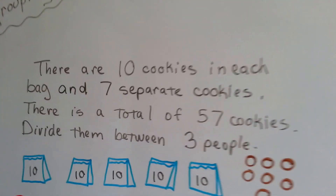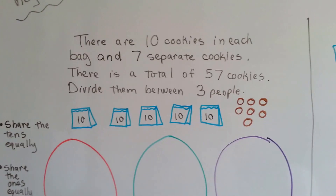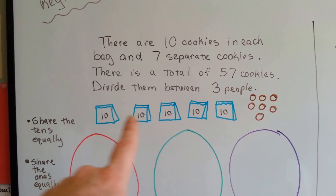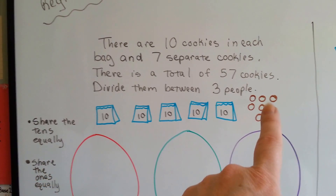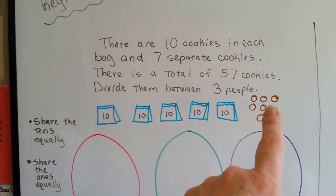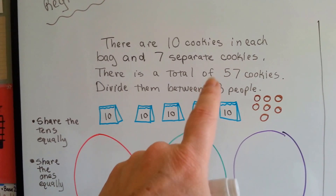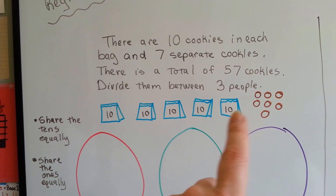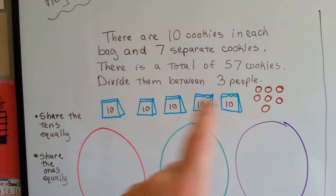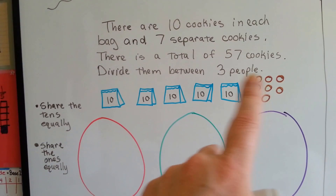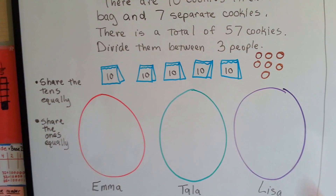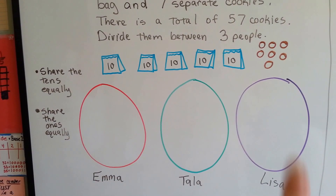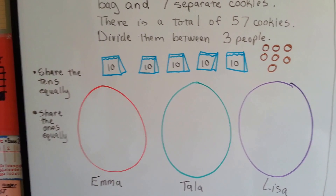So let's see what I'm talking about. There are ten cookies in each of these bags, and we have seven separate cookies over here — so that's a total of 57 cookies. We want to divide them between three people: Emma, Tala, and Lisa, so they each get an even amount.